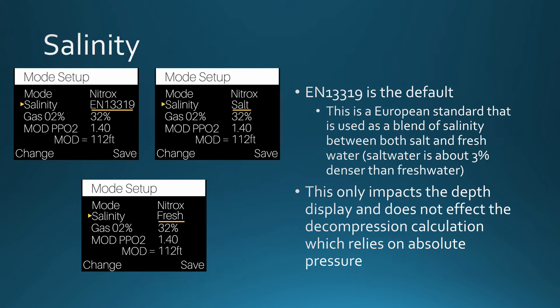From the mode setup screen, you can also change the salinity settings. Your options are the default EN13319 setting — a European standard that is a blend between salt and fresh water — or you can adjust the salinity to either salt or fresh. Salt water is denser than fresh water, so this will impact your depth display, while changing it does not affect your decompression calculation.